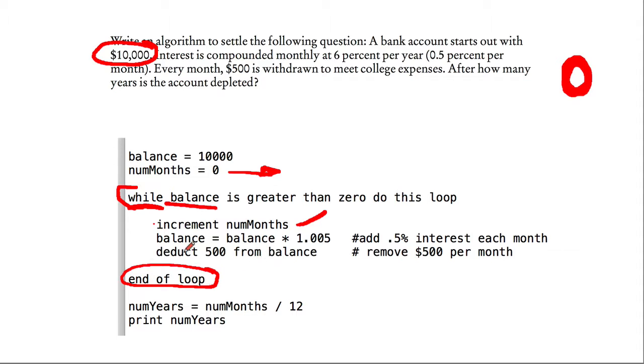Now, it's a little ambiguous whether each month we deduct 500. But we also add interest. And so it's a little ambiguous the order of these two. And the order of these two is going to matter slightly. But I didn't take any points off for if you did one before the other.